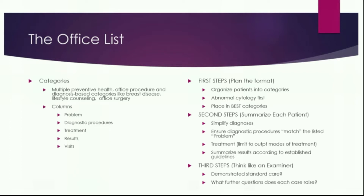You also want to summarize the results according to established care guidelines. A great example: someone with abnormal uterine bleeding who is less than 45 years old — if you did an endometrial biopsy on this patient, it would be important to establish why you fell outside the norms. In the problem, you could say abnormal uterine bleeding with family history of endometrial cancer, and the examiner would understand. PCOS would be another reason, or if you failed medical management, or if you had an atypical glandular pap.